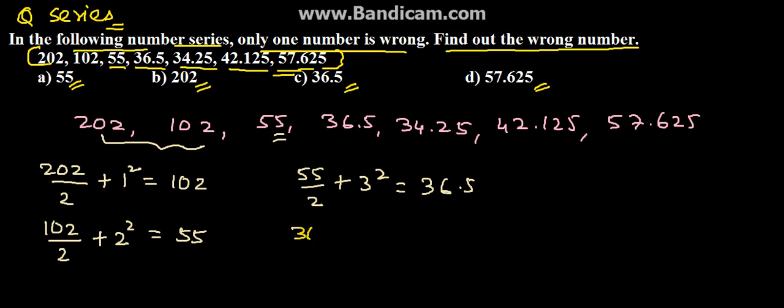So 36.5 if divided by 2 plus 4 square, we will get 34.25. So 36.5 and if 34.25 if divided by 2 and plus 5 square, we will get 42.125.